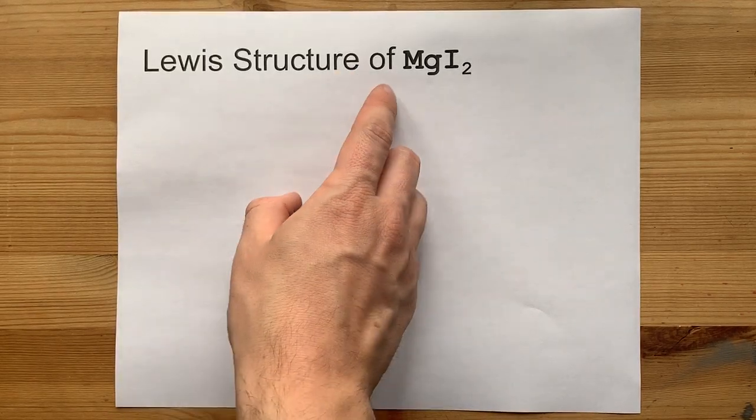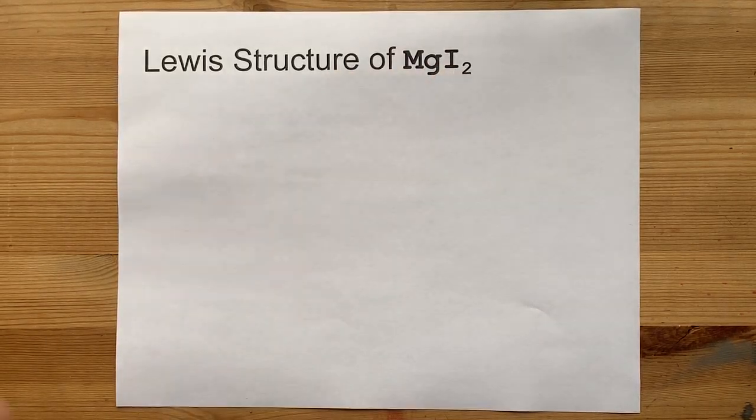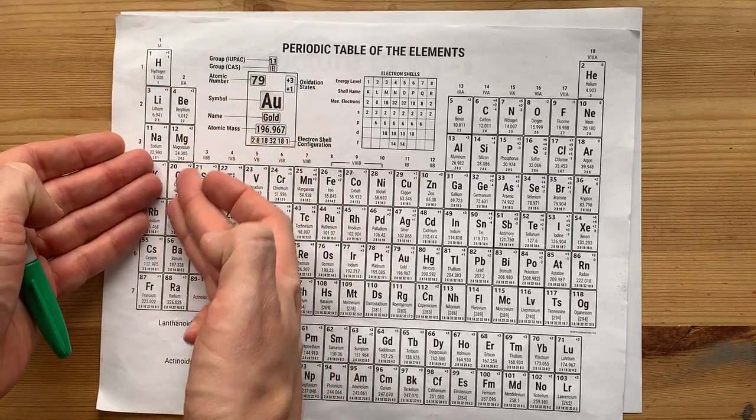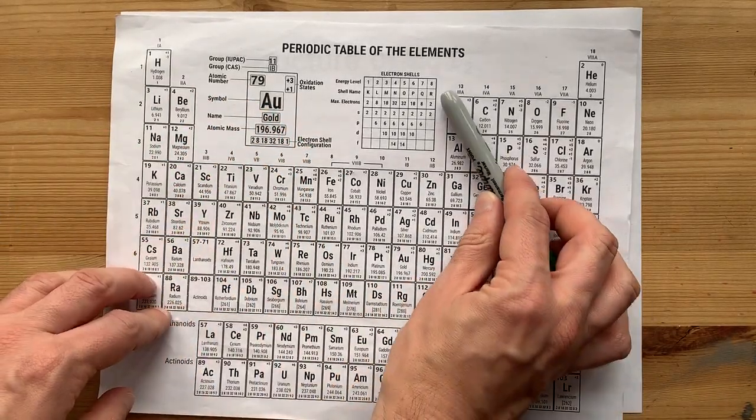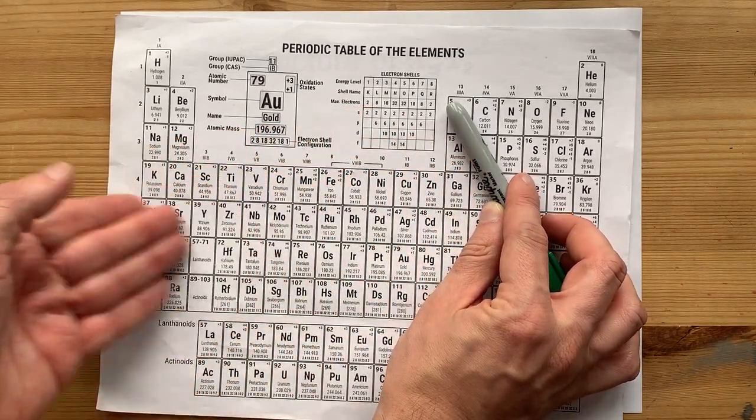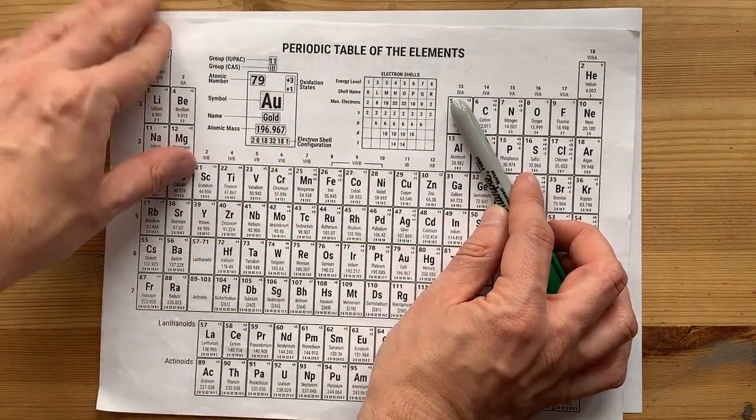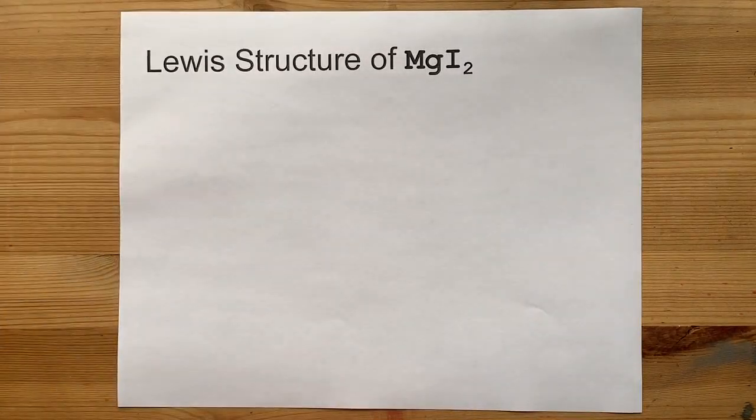Shall we draw the Lewis structure of MgI₂? Yes, let's. Magnesium is an alkaline earth metal, and in fact anything to the left of this staircase on the periodic table is generally a metal. Hydrogen not included.